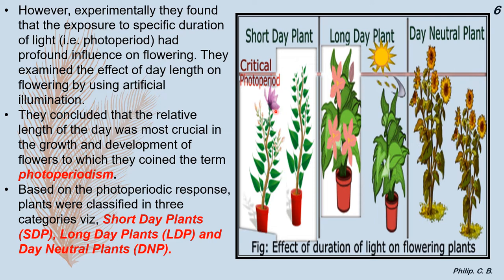The effect of duration of light on flowering is illustrated with images showing short day plants, long day plants, and day neutral plants in pots. In day neutral plants, flowering takes place in both conditions. In long day plants, the plant blooms in one condition but not the other. In short day plants, blooming occurs during one time period but not the other.